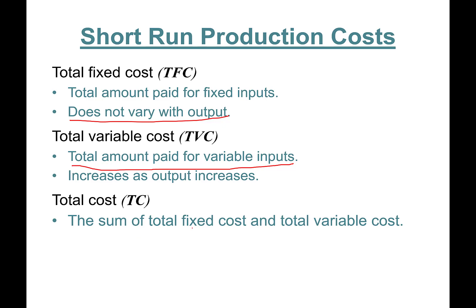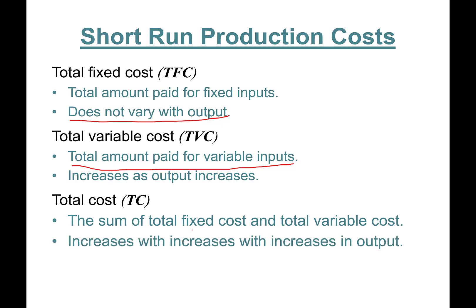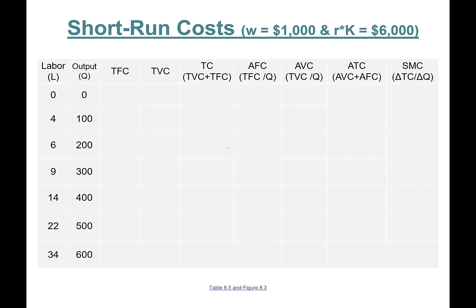Total variable cost increases as output increases, and total cost increases with increases in output — there was a typo there, so we erase that part. Total cost equals TFC plus TVC. Here is a short-run cost table we're going to be working off of.